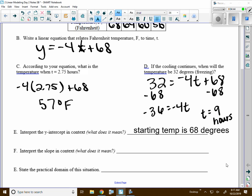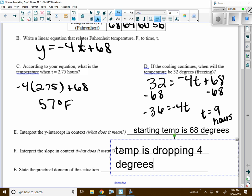Somebody interpret the slope form. What's going on with the slope? The temperature is dropping 4 degrees Fahrenheit per hour.